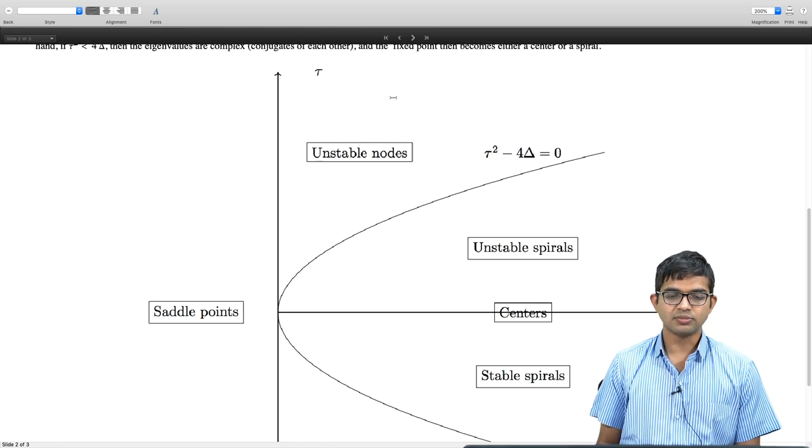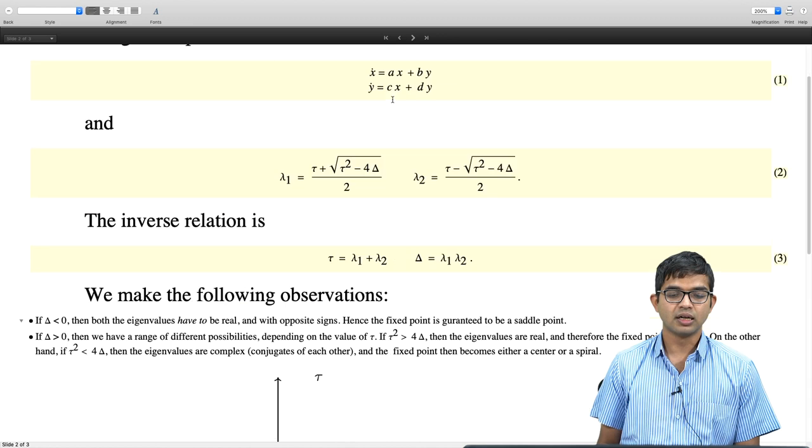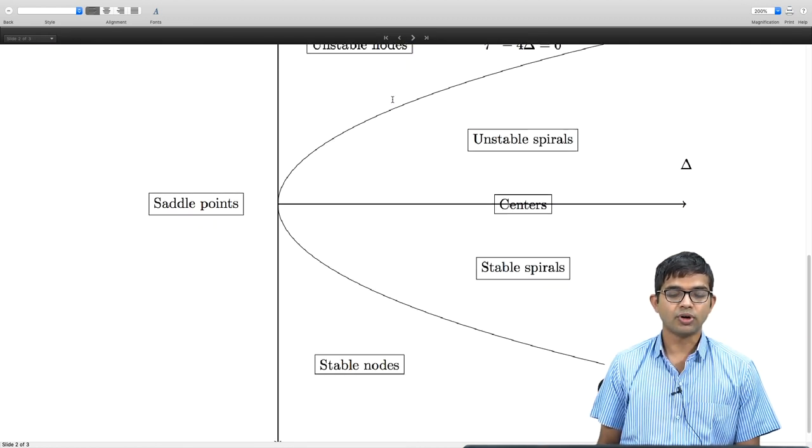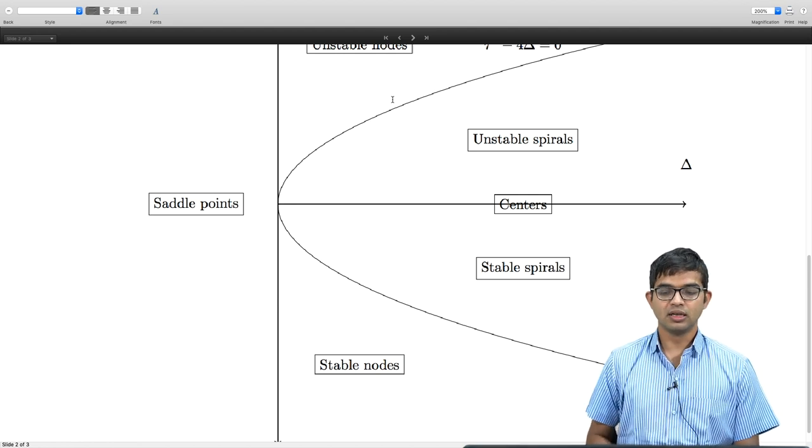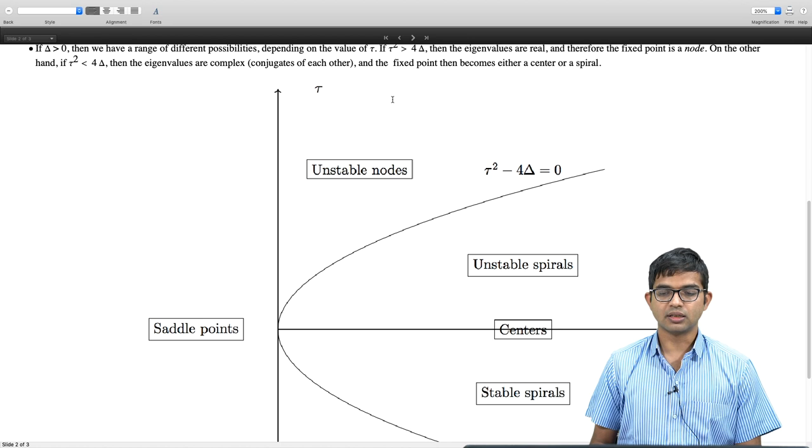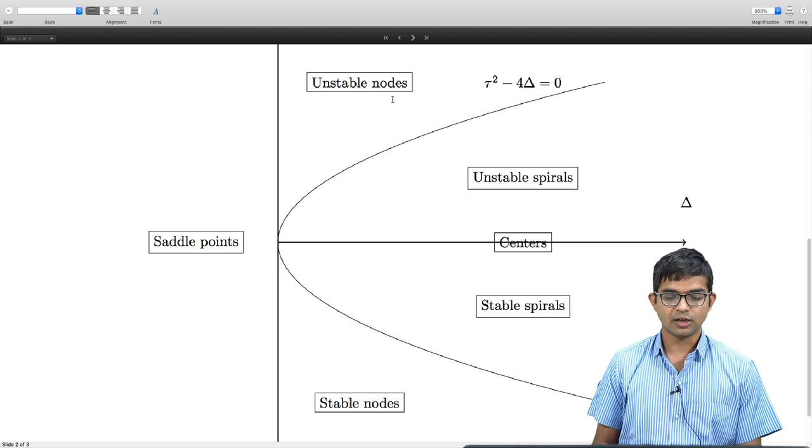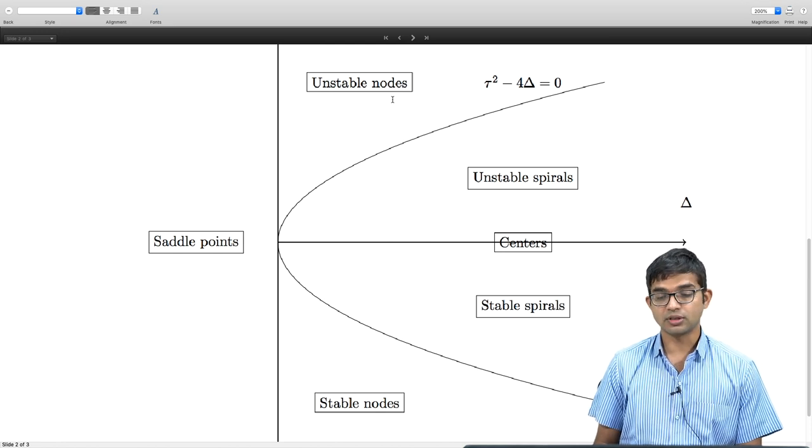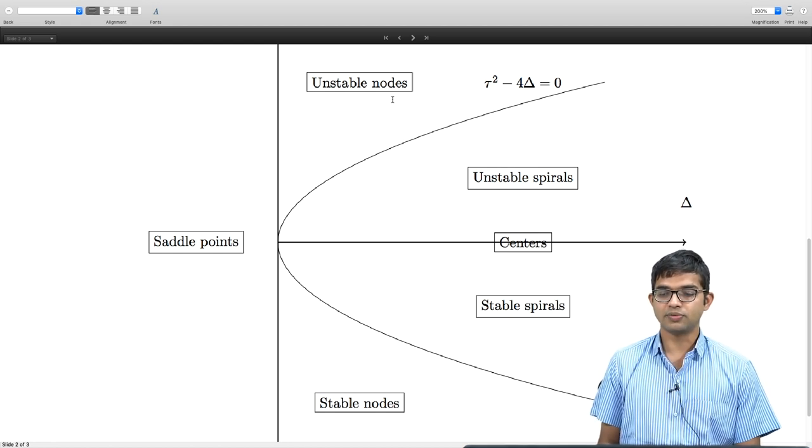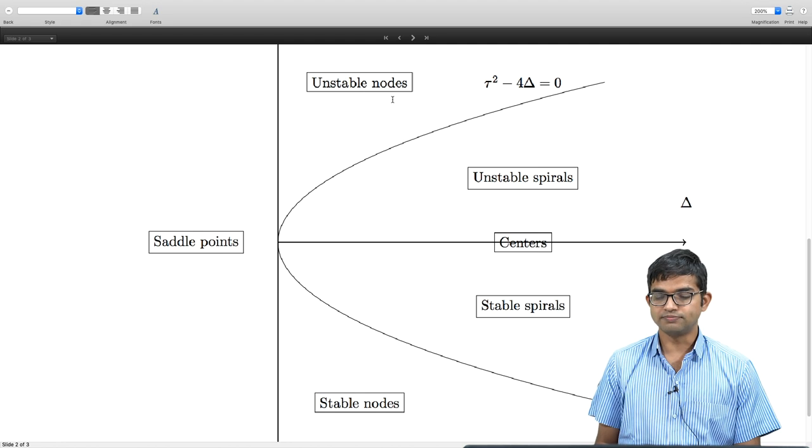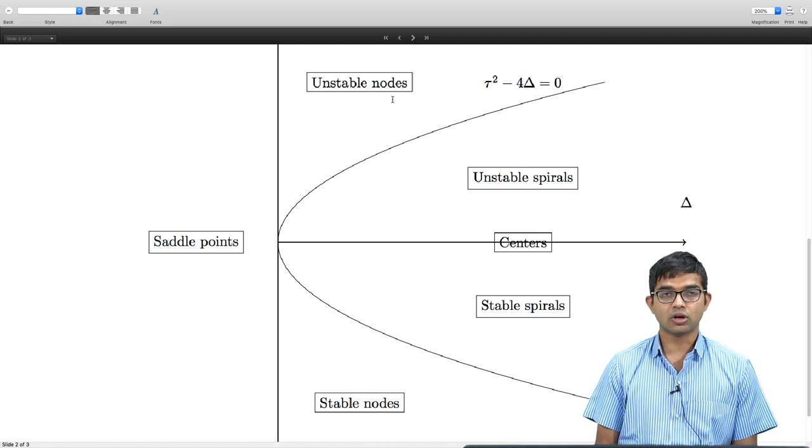This picture compactly captures all possibilities for the nature of the fixed point at the origin. You see that the large majority of systems actually give you saddle points. Saddle points are points where your system is stable along one direction but unstable along another direction. Then there is another fairly common case, but not as common as saddle points, that of nodes. Some half of them are stable and other half are unstable.